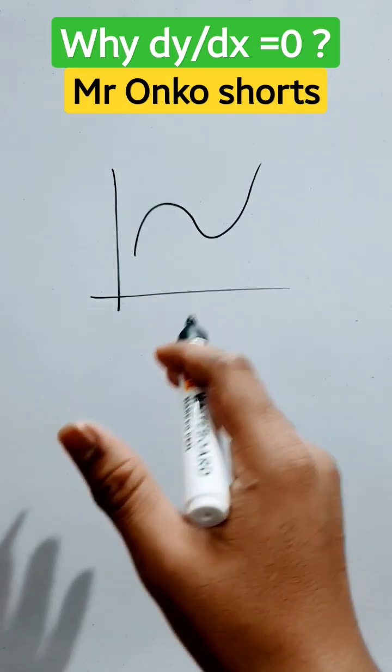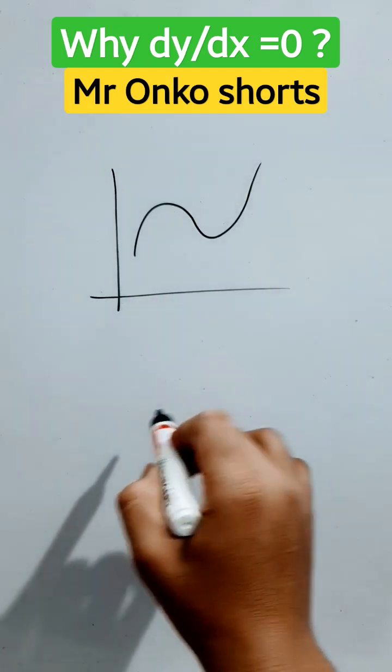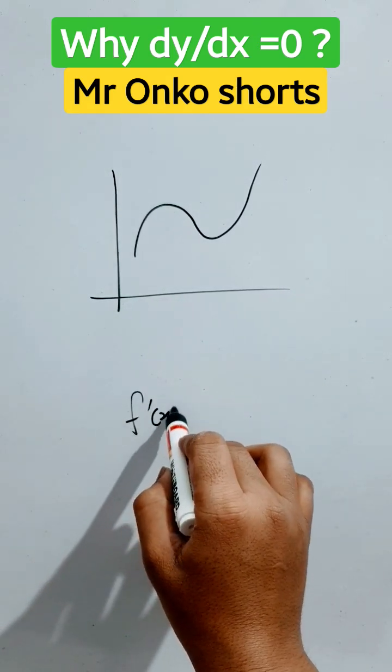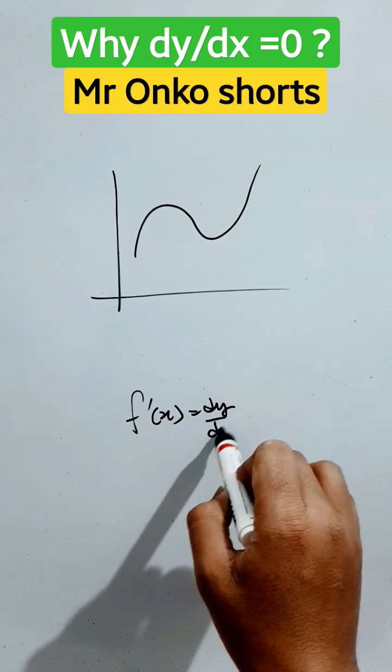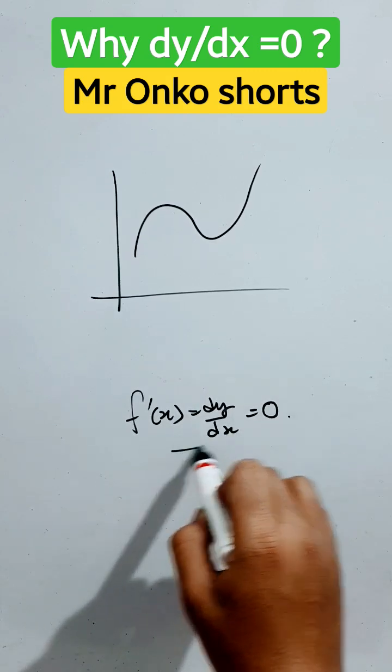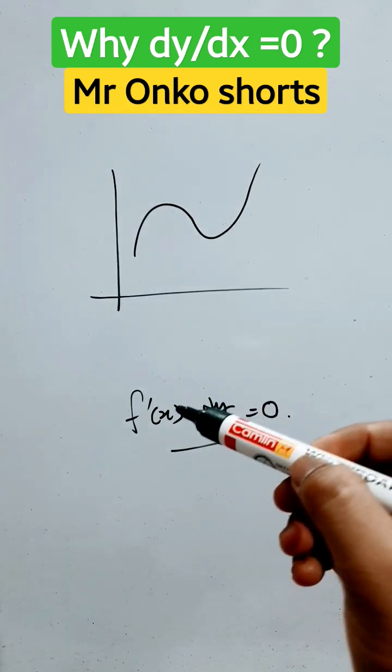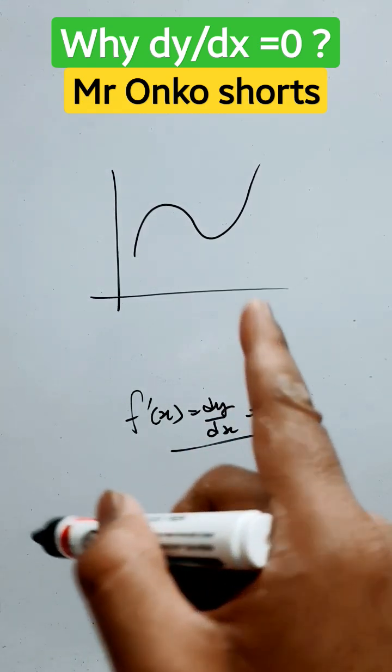Today we will learn the trick and the reason why we take f'(x), that is the first derivative of a function, that is dy/dx, also equals to 0 for any given function to find the maxima or minima value of the given function.